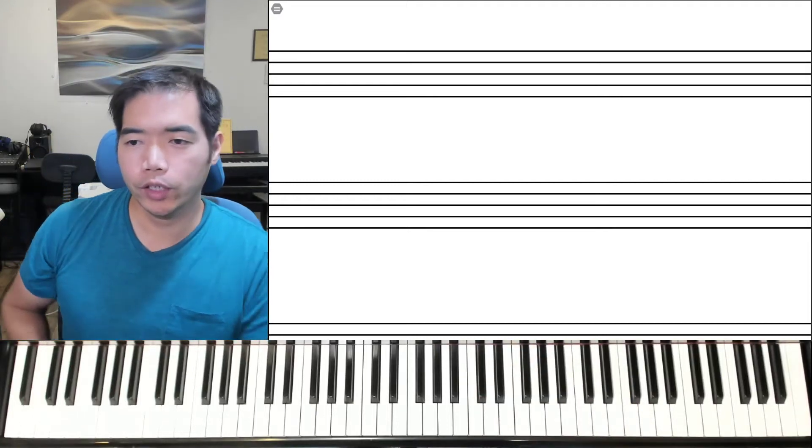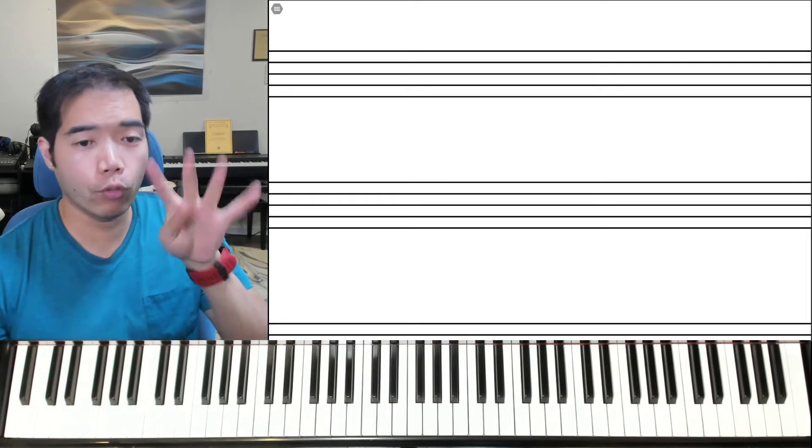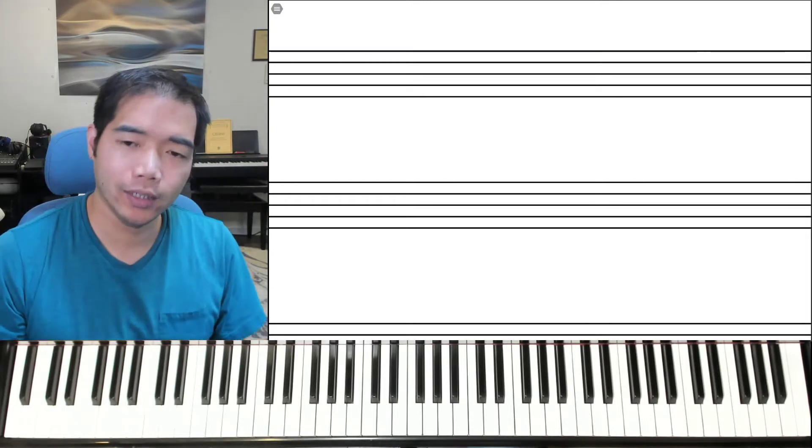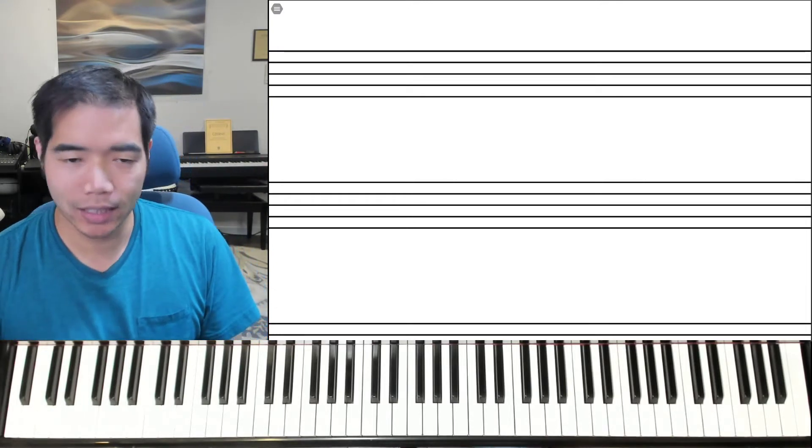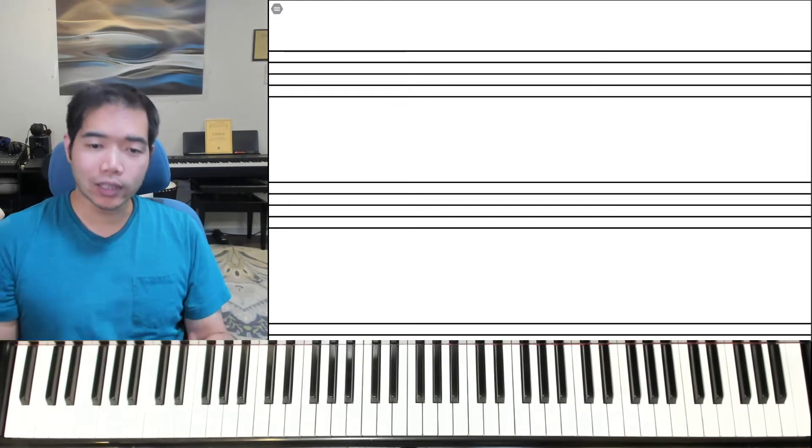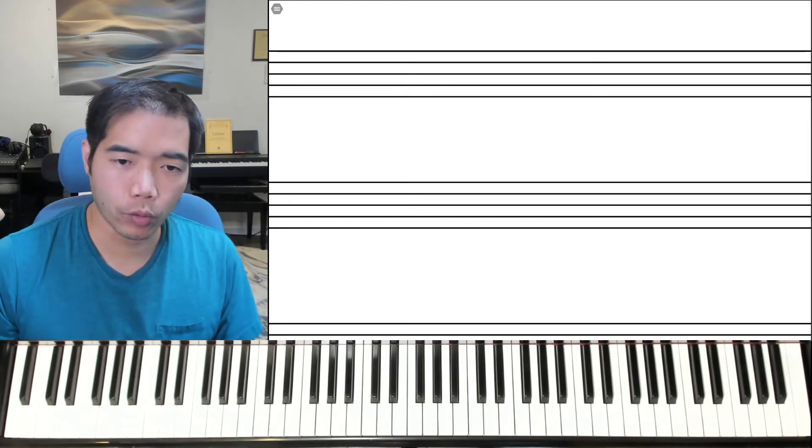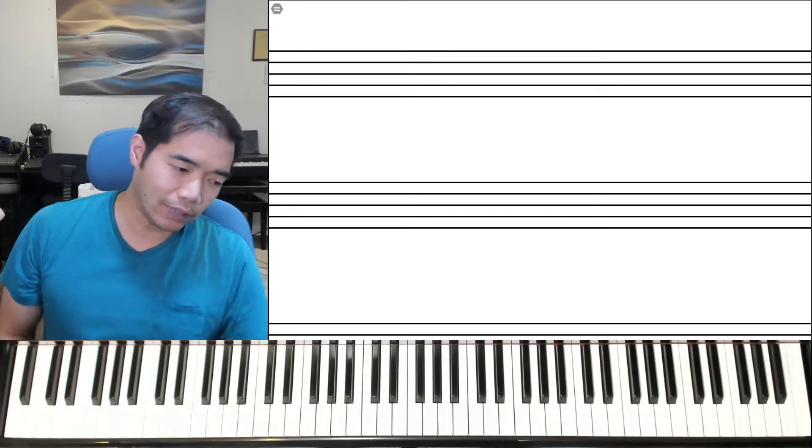Welcome back. In this video, we are going to talk about how to write for four voices - soprano, alto, tenor, bass - using triads and seventh chords, and how to prioritize the parts of the chords: the root, the third, the fifth, or the seventh.